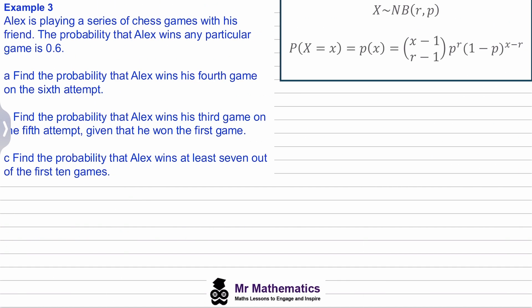In example three, Alex is playing a series of chess games with his friend. The probability that Alex wins any particular game is 0.6. For part a, find the probability Alex wins his fourth game on the sixth attempt. For part b, find the probability he wins his third game on the fifth attempt given he won the first game. For part c, find the probability he wins at least seven out of the first ten games.